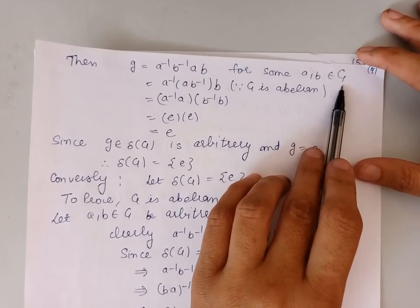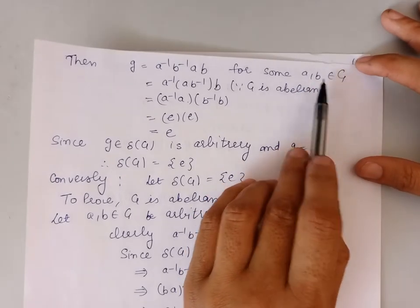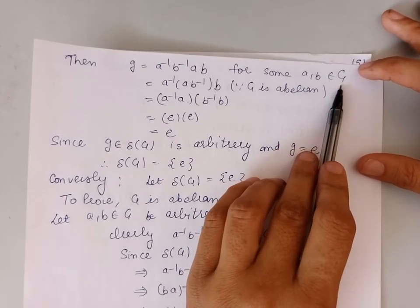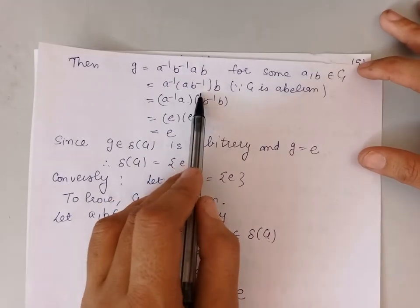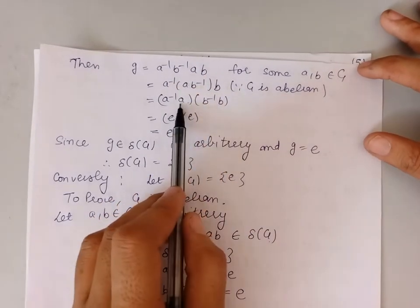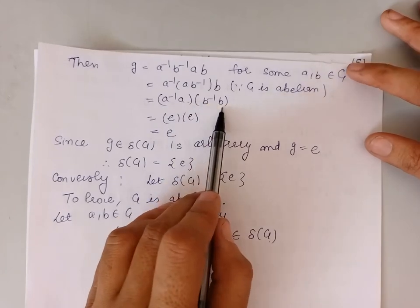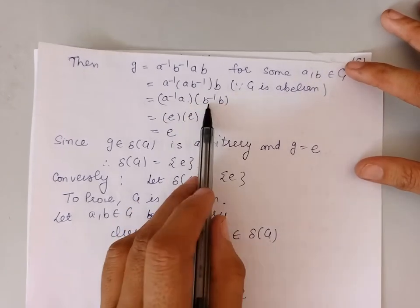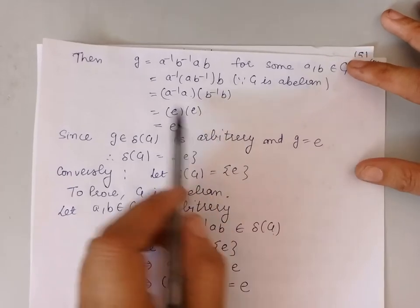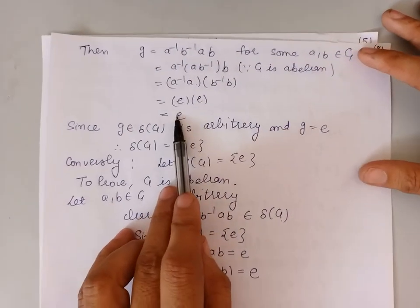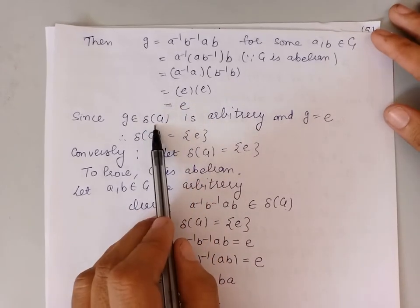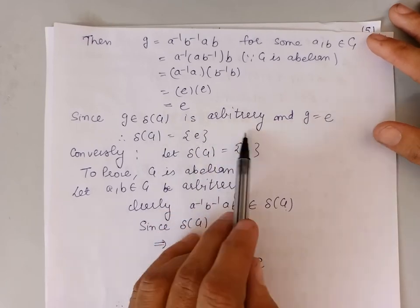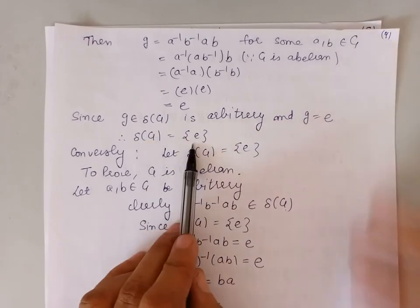Because the group is abelian, A and B are elements of group G, and therefore B⁻¹A can be written as AB⁻¹. So g = A⁻¹·A · B⁻¹·B. Now A⁻¹A is the identity and B⁻¹B is the identity, so we get g equals the identity. Because g was an arbitrarily chosen element of the commutator subgroup of G, we can say that the derived subgroup of G is the identity.